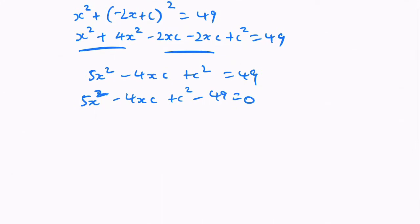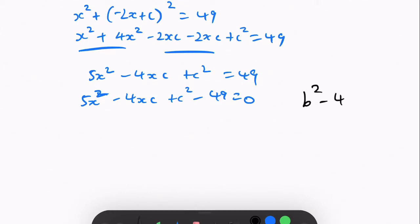Then we're going to use the discriminant, the equation, the formula for that, b squared minus 4ac to calculate the c value.